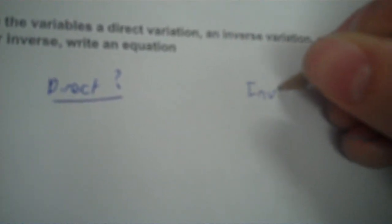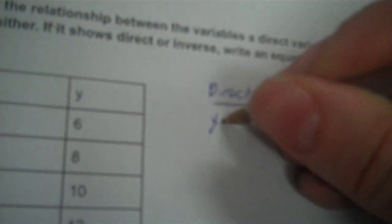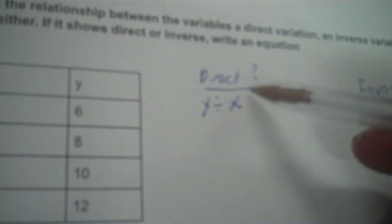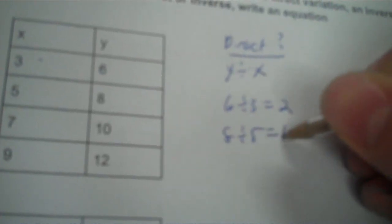So I'm going to do direct question mark, inverse question mark. Now direct is division. It's y divided by x. If y divided by x is the same thing every time, it's direct. Inverse is if y times x is the same every time. So we're going to take 6 divided by 3, that's 2. Then 8 divided by 5 is not 2, it's 1.6, so it can't be direct.